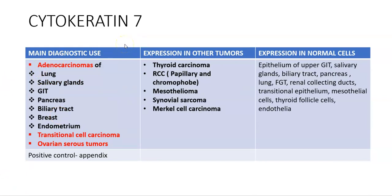Cytokeratin 6's main diagnostic use is again squamous cell carcinoma, but it can also be expressed in poorly differentiated breast carcinoma (basal-like phenotype). Normally it is expressed in suprabasal cells, hair shaft, and nail. The positive control is tonsil. Cytokeratin 7's main diagnostic use is adenocarcinomas — of lung, salivary glands, GIT, pancreas, biliary tract, breast, and endometrium — as well as transitional cell carcinomas and ovarian serous tumors. It can also be expressed in thyroid carcinomas, renal cell carcinoma (papillary and chromophobe type), mesothelioma, synovial sarcoma, and Merkel cell carcinomas. The positive control is appendix. It is normally expressed in GIT, salivary gland, biliary tract, female genital tract, transitional epithelium, mesothelial cells, thyroid follicle cells, and endothelial cells.